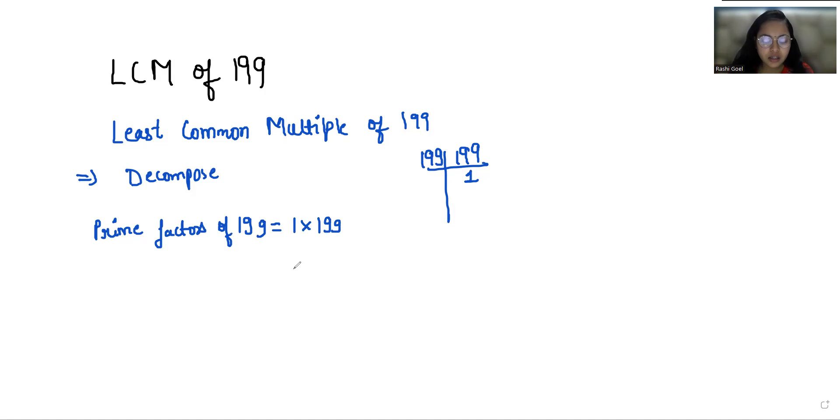So it is 199 to the power of 1. So we can say that LCM of 199 is 199, because it's a prime number. I hope it's clear and you find it useful. So please give us a thumbs up and subscribe to my channel.